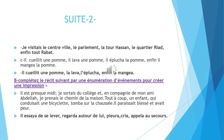Complétez le récit suivant par une énumération d'événements pour créer une impression. Il est presque midi. Je sortais du collège et en compagnie de mon ami Abdelma, je prenais le chemin de la maison. Tout à coup, un enfant qui conduisait une bicyclette tomba sur la chaussée. Il paraissait blessé et avait peur. Je peux donner quelques événements pour renforcer l'idée de peur et de blessure: il essaya de se lever, regarda autour de lui, pleura, cria, appela au secours. On voit bien que l'enfant avait vraiment peur.